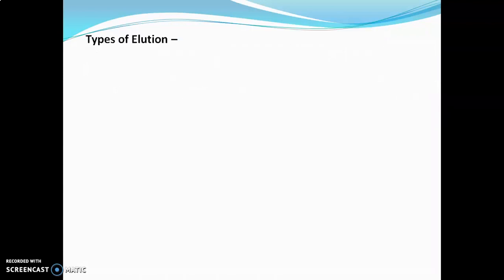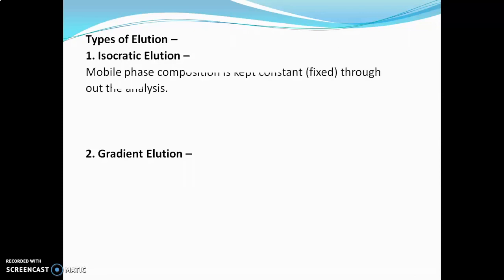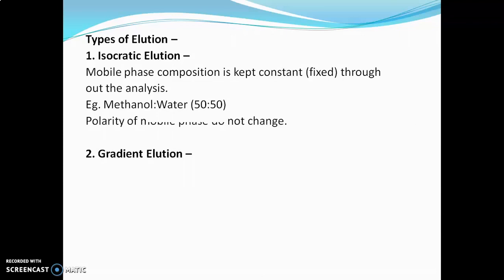There are two types of elution. First is isocratic elution and second is gradient elution. In isocratic elution, the mobile phase composition is kept constant or fixed throughout the analysis. For example, if the mobile phase is methanol and water in 50:50%, this composition is kept constant throughout the analysis. The polarity of the mobile phase does not change in this type of elution. It is used for samples whose polarity is known, or generally for known samples.